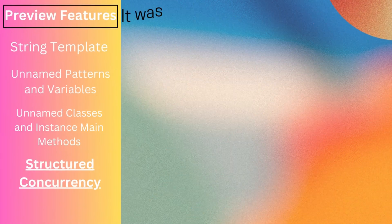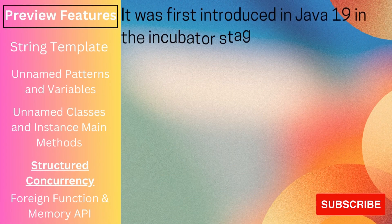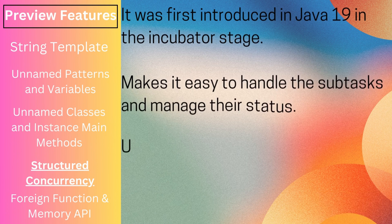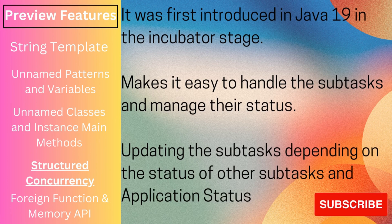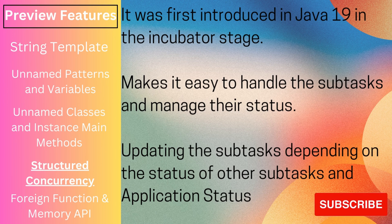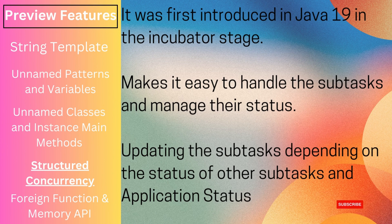Next is structured concurrency, first introduced in Java 19 in the incubator stage. Suppose a task consists of subtasks that can be done in parallel — we can implement it using ExecutorService. But handling error cases, cancelling other tasks when one fails, handling shutdown, or stopping tasks once one completes, all of these require extremely complex and hard-to-maintain code. In Java 21, all these scenarios can be very easily implemented. We will discuss this in more detail with examples in its own video.